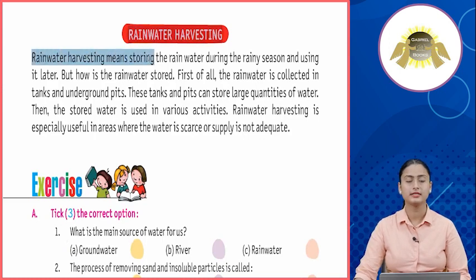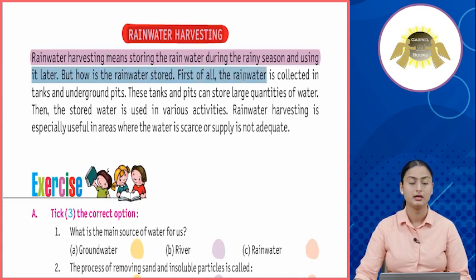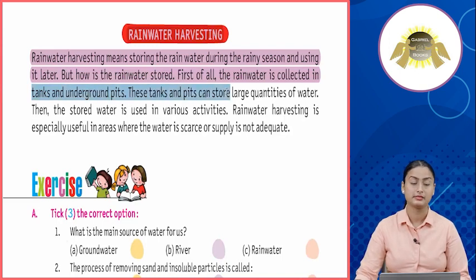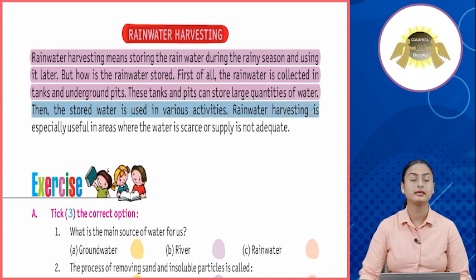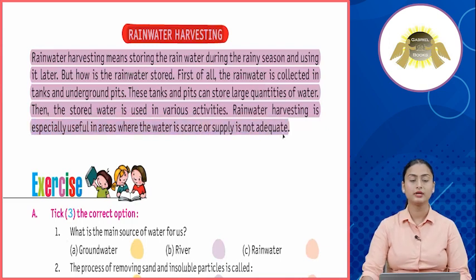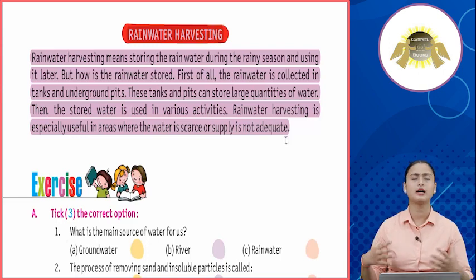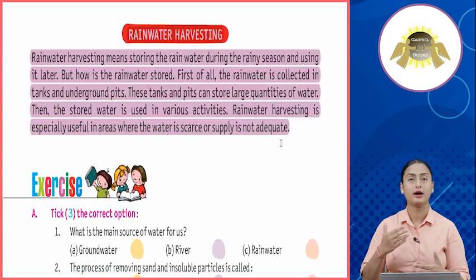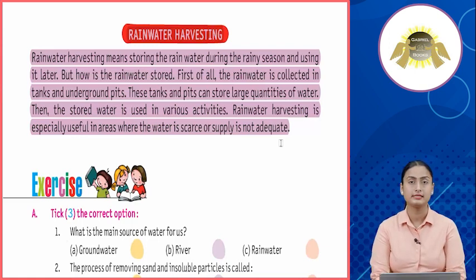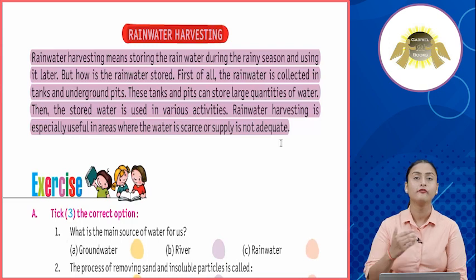Rainwater harvesting means storing rainwater during the rainy season and using it later. The rainwater is collected in tanks and underground pits, which can store large quantities of water, and then used in various activities. Rainwater harvesting is especially useful in areas where water is scarce or supply is not adequate. Toh rainwater harvesting ka matlab hai ki jo baarish ka paani hai usko alag-alag containers mein save kara jata hai aur baad mein use kara jata hai — isse jo humari water scarcity ki dikkat hai usko hum fulfill kar sakte hain.